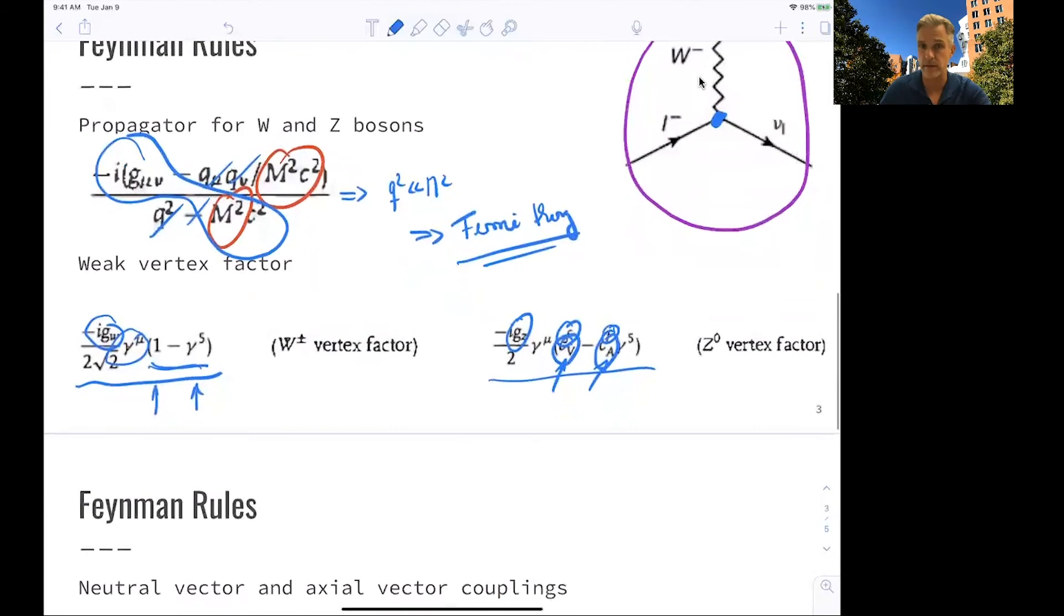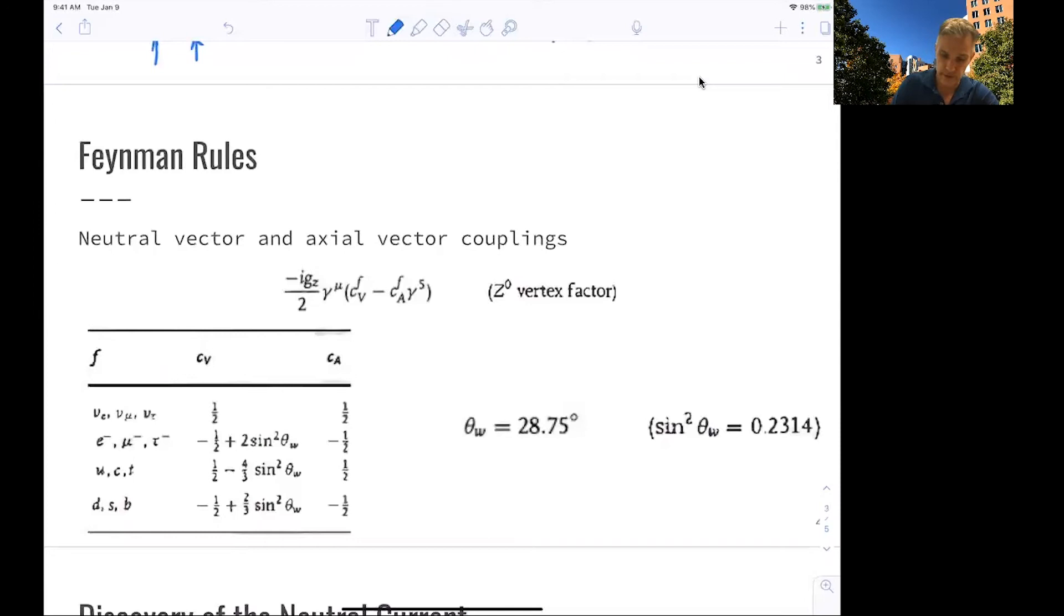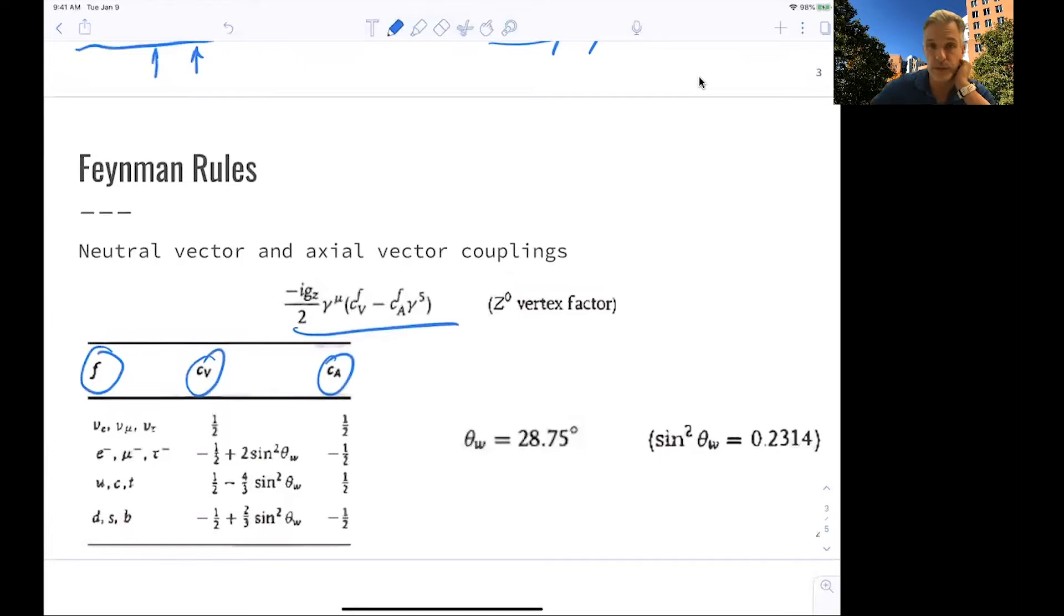Now for the neutral currents, we just have seen that this is the vertex vector. And here, for all fermions, we list what these values are for Cv and Ca. What you can see is that for the neutrinos, the vector is one half, both for Cv and Ca. And for the charged leptons and quarks, there is an even more complicated term here, which includes a new parameter, sine square theta_w. The value of this is 28 degrees, sine square theta_w is 0.231.